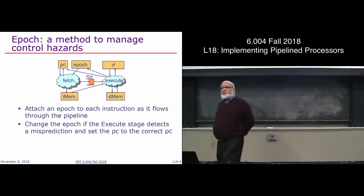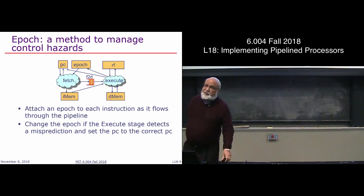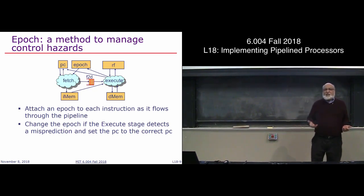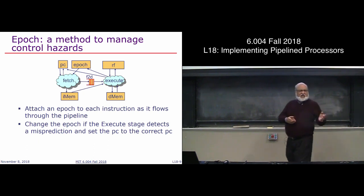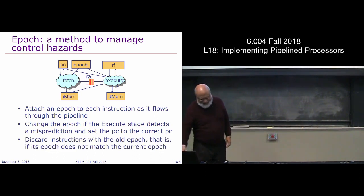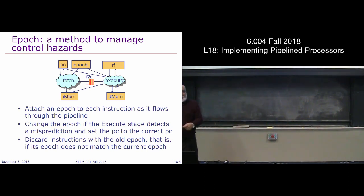You still need a predicted program counter even with epochs, because the fetch unit always has to predict the next PC — and that has to happen very fast. In our case it's PC plus 4, but there are more interesting prediction methods. Each instruction appends an epoch to it. There is an epoch register; at fetch time, attach it to the instruction. The epoch register changes on misprediction. By the time the instruction reaches execute, if the instruction's epoch doesn't match the current epoch register, it was on the wrong path.